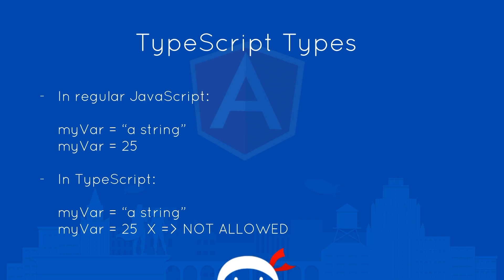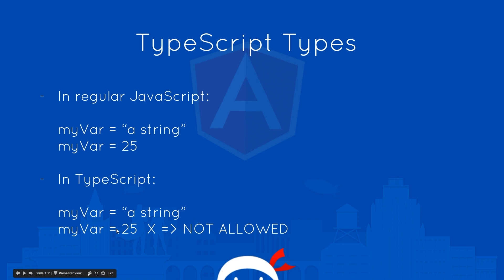When we're working with regular JavaScript, we can declare a variable like this: my var equals a string. Then later on in the program we could say my var equals 25 — now a number. In TypeScript, we cannot do that. We cannot change the type of a variable. If we declare a variable my var as a string, then we cannot later assign a number to that same variable. This is not allowed.